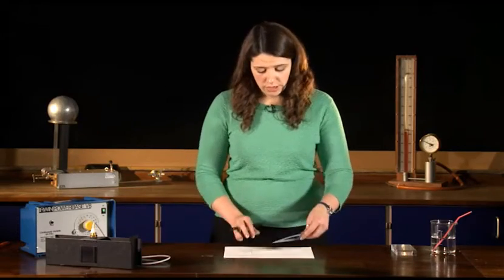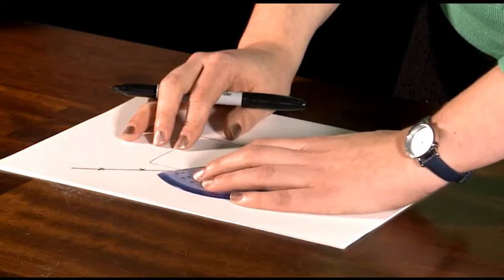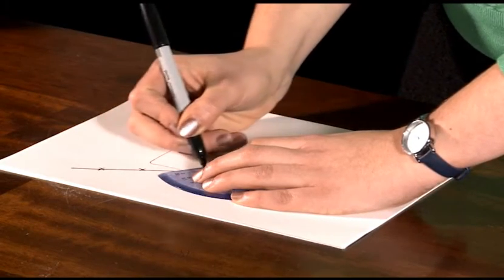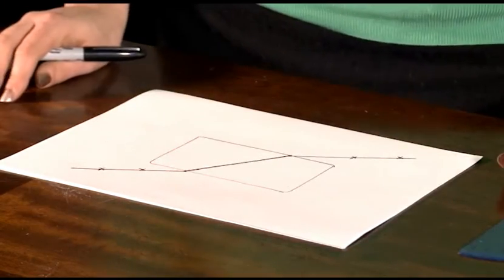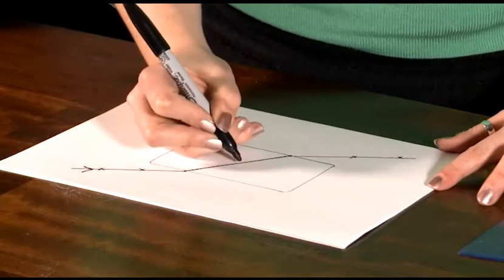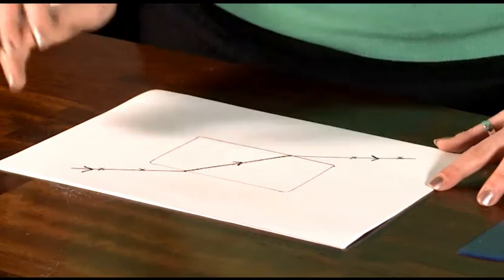Now the light traveled through the block, it's hard to see it, but it traveled through in a straight line. So I just need to draw a line that matches up those two rays. Now ray diagrams should generally be drawn in pencil, and you also need to draw an arrow on each ray of light to show the direction that the light is traveling.